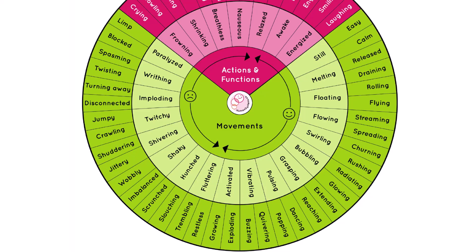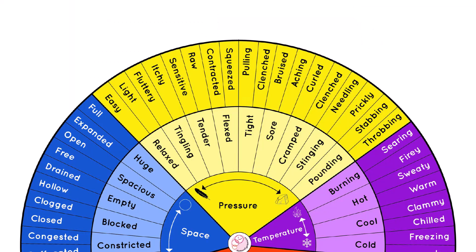On this wheel, face emojis and arrows indicate areas of generally pleasurable or painful sensations to make it easier for users to find the word that fits their state of mind and body. The pressure category includes words that indicate how much pressure we are experiencing inside and outside of our body, and includes pain words such as stinging and aching.